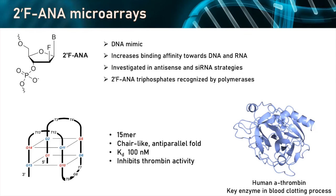We started working with FANA on aptamer research. We looked at this particular structure — a small G-quadruplex made up of 15 nucleotides — which is known to bind to human thrombin and inhibit the activity of this protein, with a Kd of about 100 nanomolar. We thought: can we actually find a particular G-quadruplex containing FANA modification that would increase the binding to thrombin?